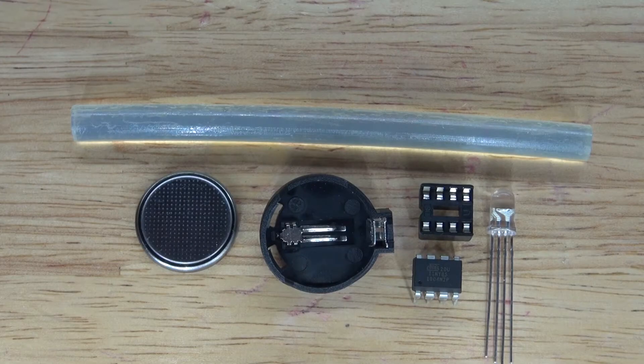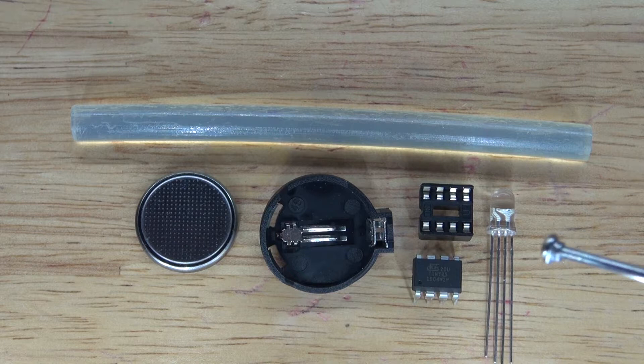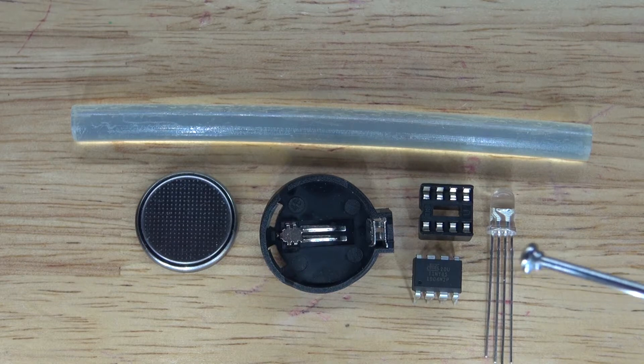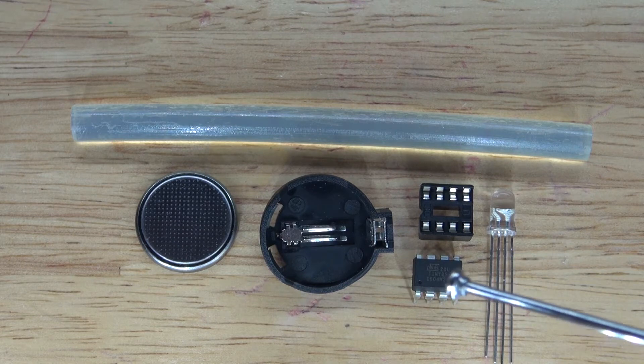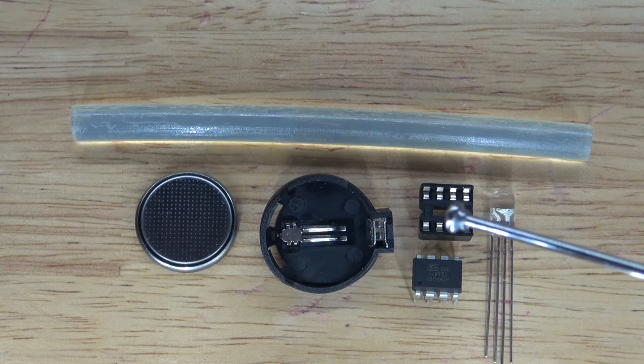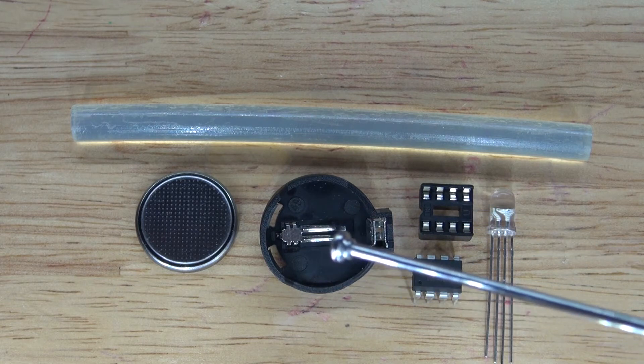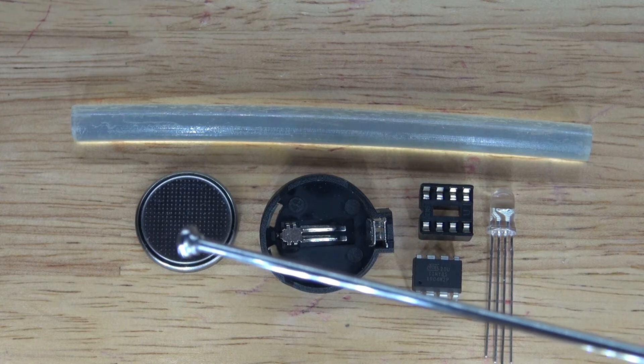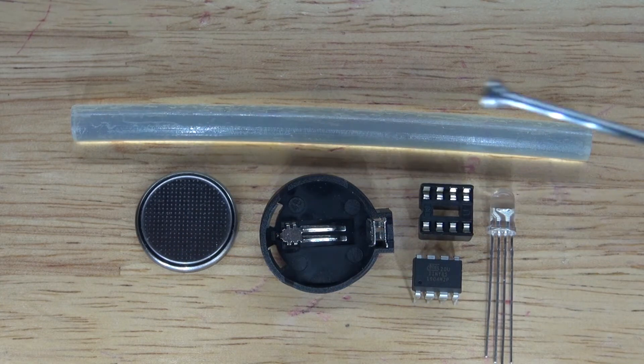And these are the items that you're going to need to make for this project. The items you're going to need are an RGB LED common cathode, an ATtiny85 microcontroller, an 8 pin IC socket holder, a 3 volt button cell battery holder, a 3 volt button cell battery, and a glue stick.